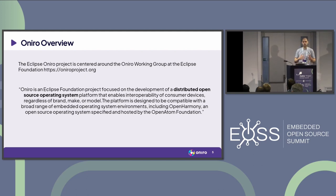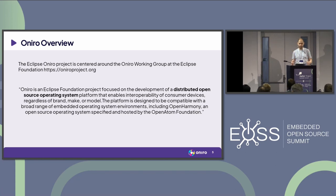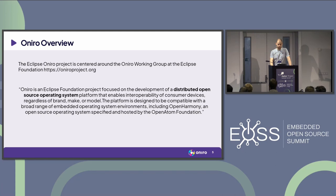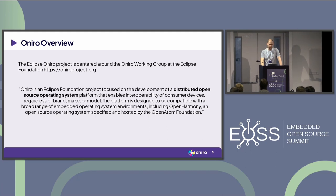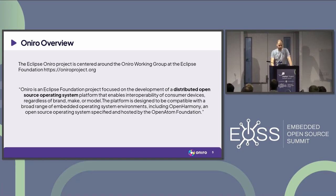Neuro itself is a project at the Eclipse Foundation. There's a working group at the Eclipse Foundation driving it. In a nutshell, it's an operating system we are building with a lot of distributed aspects — good wireless connectivity to make different devices work together and form more intelligent networks. The idea is to bring something over from the OpenAtom side in China, where they started something called OpenHarmony. Neuro is kind of the sister project to that, something we are bringing up in the European area.